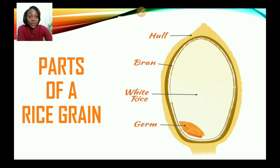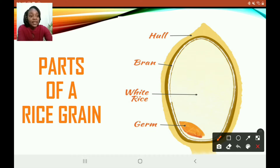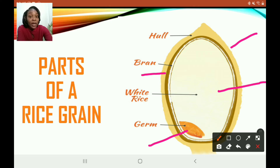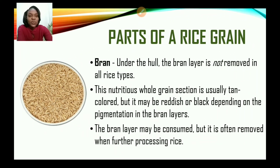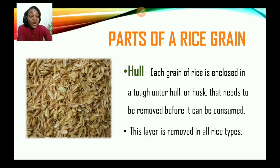Now let us look at the parts of a rice grain. You may notice that the parts of the rice grain are very similar to cereal grains — because rice is also a cereal. The parts of the rice grain include: the hull, the bran, the endosperm, and the germ found under the hull. Each grain of rice is enclosed in a tough outer hull or husk that needs to be removed before it can be consumed.